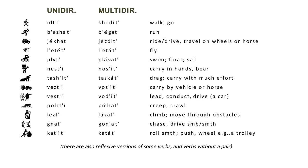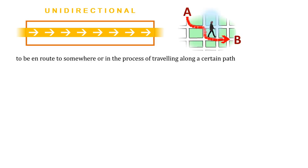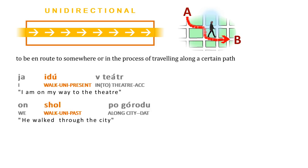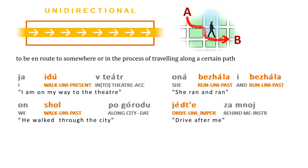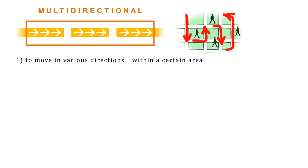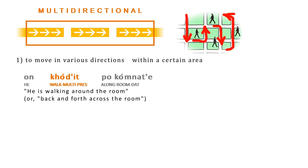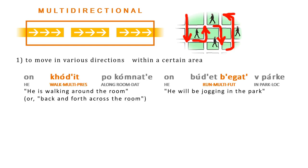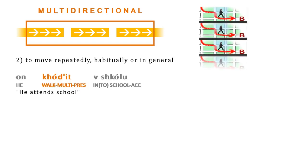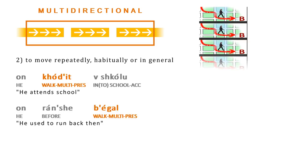Usually these two types are called unidirectional and multidirectional. A unidirectional verb conveys a picture of motion to a certain goal, as in 'I am on my way to a city.' The goal may be unspecified and manifest only in terms of a particular trajectory, as in 'he walked slowly through the city', 'she ran and ran', 'please drive after me.' The unidirectional type is also used to convey ideas like time running or everything going well. The multidirectional form has two main applications: motion in various directions within a spatial area — walking up and down the room, running about the backyard — and any kind of repetitive or habitual motion, such as going to school on a regular basis, running long distances, or traveling to many locations.